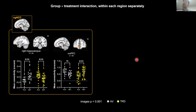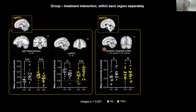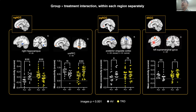Looking at post-hoc group-by-treatment interactions within each region separately: the subgenual showed significant interactions with the right hippocampus extending into the parahippocampal gyrus, and a similar region of ventromedial prefrontal cortex. The perigenual showed a significant interaction with the posterior cingulate cortex, in line with its connectivity to the default mode network. The dorsal ACC showed a significant interaction with the left supramarginal gyrus, consistent with its involvement in somatosensory and attention networks rather than the limbic and default mode regions of the ventral ACC.